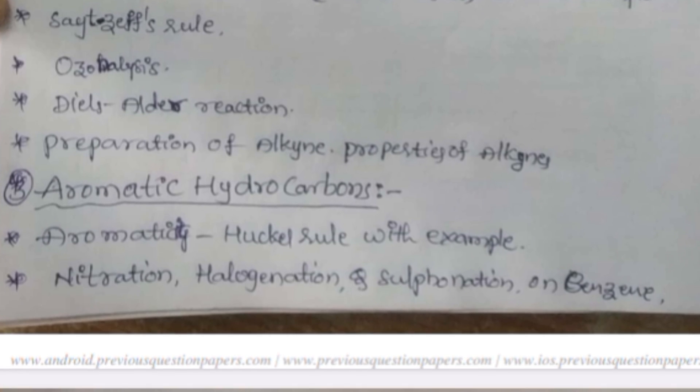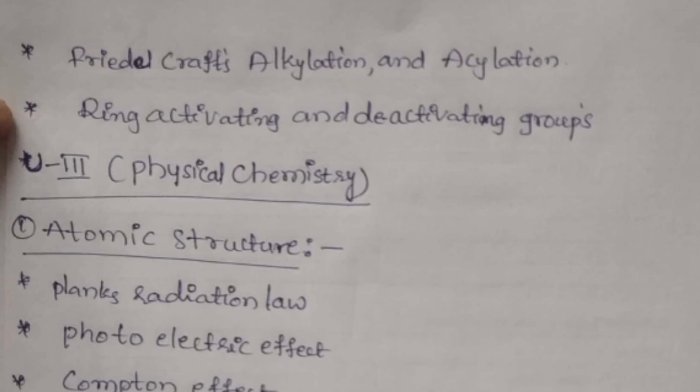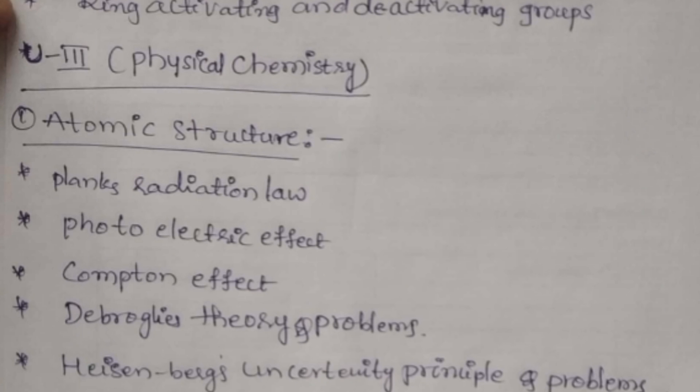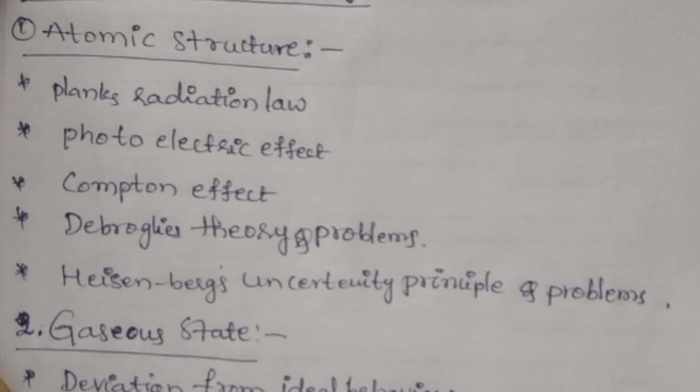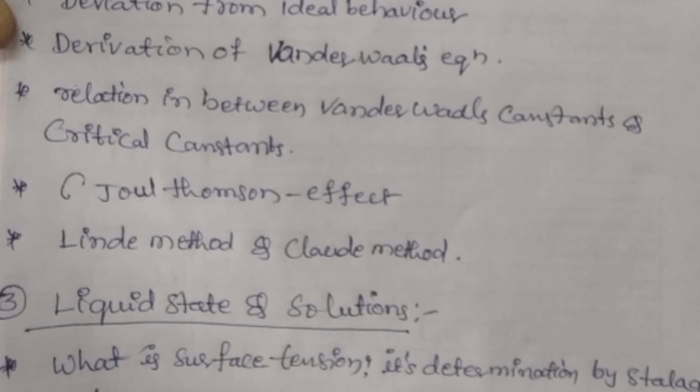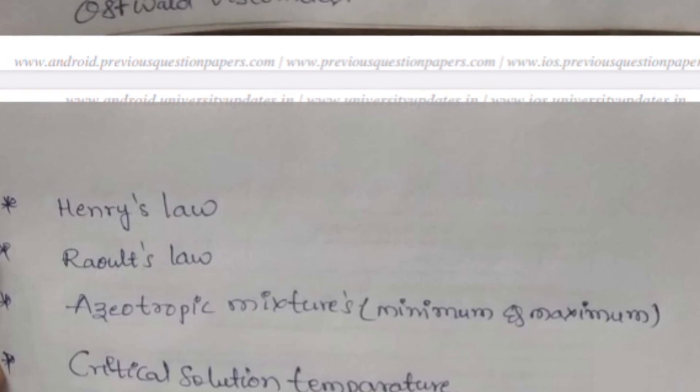Actually, chemistry is a little bit a hard subject, it seems. So you need to work hard to get past this subject or to get O grade in the subject. So try to learn all these questions. So here in Unit Number 3, Henry's laws and Raoult's laws is very much important, so try to learn those laws.